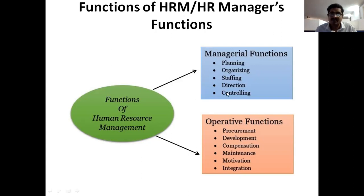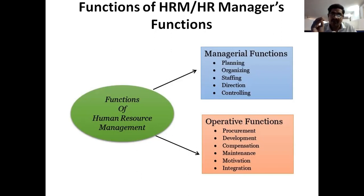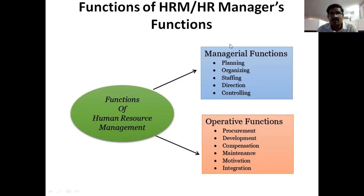Finally, controlling. Controlling has four sub-activities: preparation of standards or plans, measuring actual performance, identifying the gap between these two, and filling that gap. If a gap exists between actual performance and planned performance, we need to fill it. That is the process of controlling. These are the managerial functions, one part of functions of human resource management.